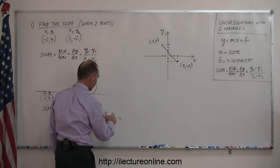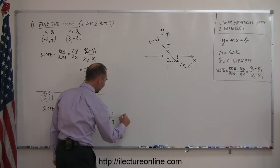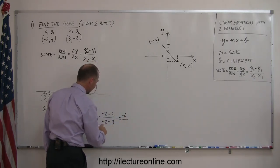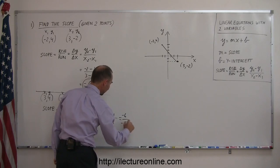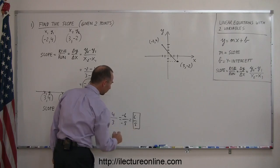So in this case we get negative 2 minus 4, that is a negative 6, divided by negative 2 minus 3 which is a minus 5. And the negatives cancel out, so I get 6 over 5. And here we have a positive slope.